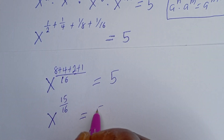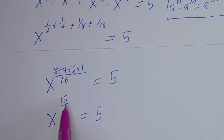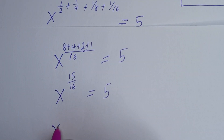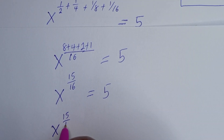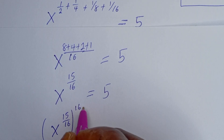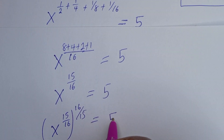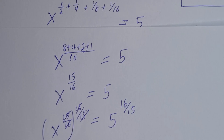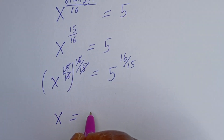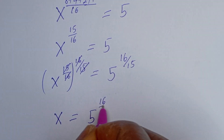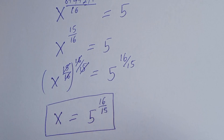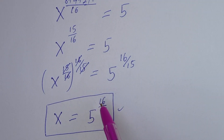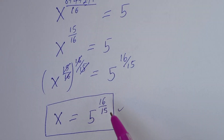We are looking for the value of s. Let's multiply the exponent of both sides by the reciprocal, which is 16 over 15. So s to the power of 15 over 16, to the power of 16 over 15, equals 5 to the power of 16 over 15. These cancel, and s equals 5 to the power of 16 over 15. This is the final answer. You can see that from Method 1 and Method 2, we got the same answer. I hope you enjoyed the class — please like, share, comment, and subscribe to my channel. Thank you, bye bye.